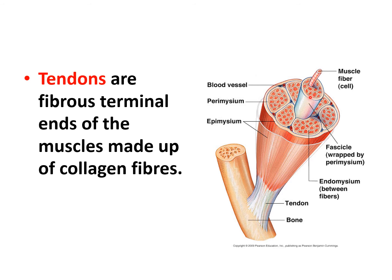Many muscle fibers form a fasciculus, which is wrapped by perimysium. The outer covering of the entire muscle is the epimysium, while endomysium covers each individual muscle fiber.